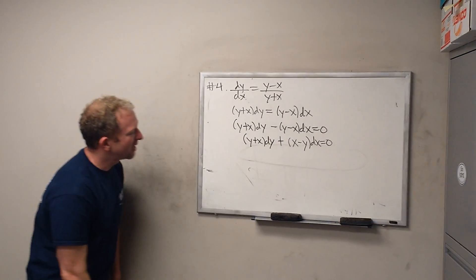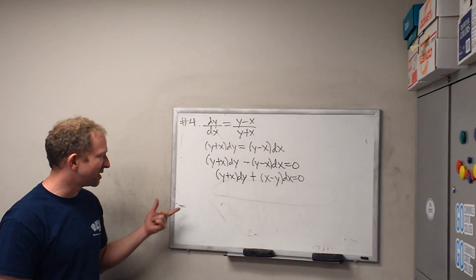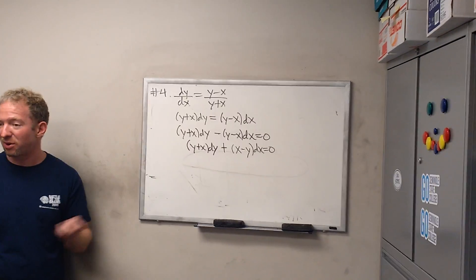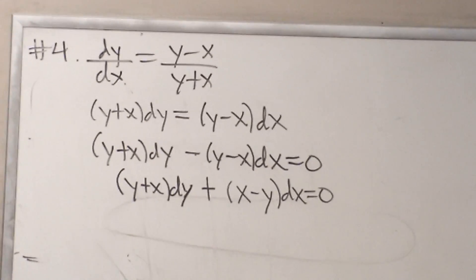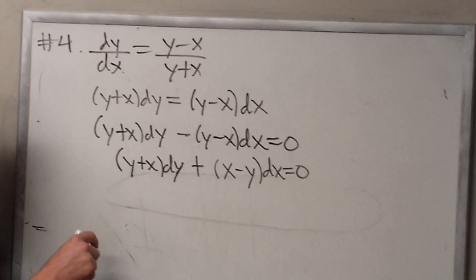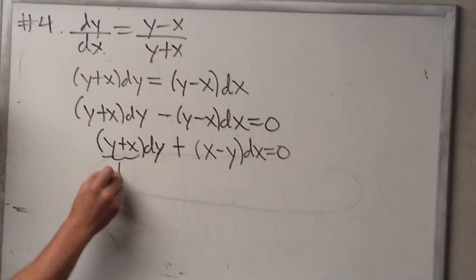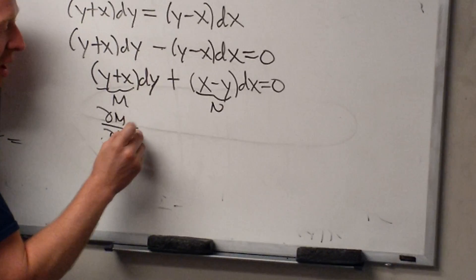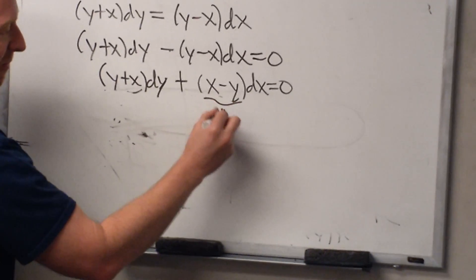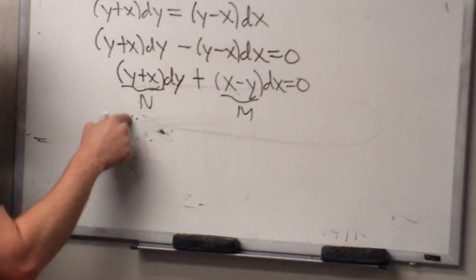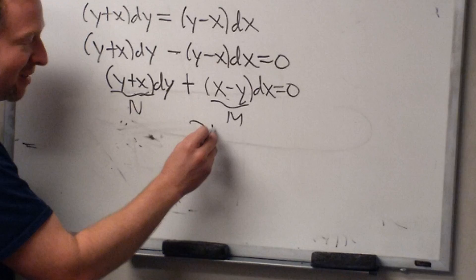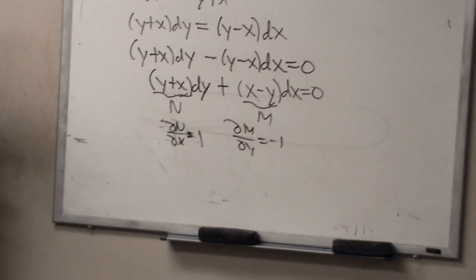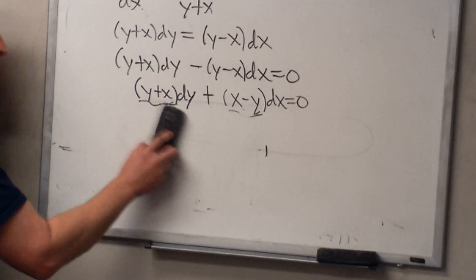Is there a reason you switched positions? I just wanted to make it look better. This could also be exact, right? It might be exact as well, but it's in the section on homogeneous. Do you want to check exactness? Let's see — if this is M and this is N, then del M del x... When you're doing exact, you call this M and this N. It's M dx plus N dy. Del M del y is negative one, and del M del x is one. So it's not exact. It could probably be made exact, but it's not. Okay, let's not.